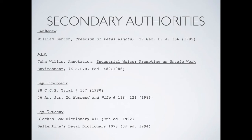For secondary authorities — things like legal encyclopedias and dictionaries — the first example is a law review citation, which is set up a lot like MLA or APA format. The ALR is set up very similarly: you give the author, the title, and then the location in the American Law Reports. Legal encyclopedias and legal dictionaries also have specific formats shown on this slide. You're not going to be citing to these as frequently as to cases, statutes, and regulations, but it's a matter of becoming familiar with how they're set up.